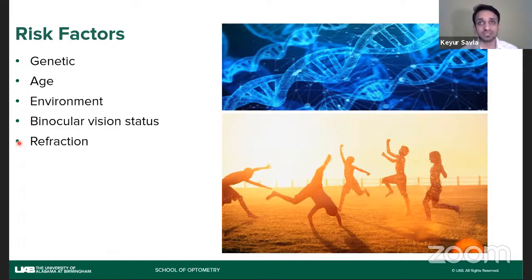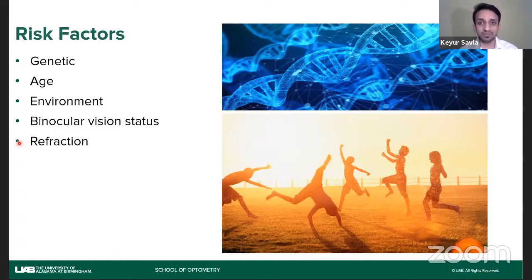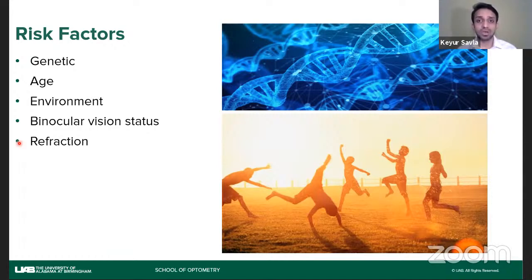Speaking about genetics — something you can really share with patients because they understand hereditary factors — if one of the two parents has myopia, it is two to three times more likely that the child will have myopia. If both parents have had or have myopia — and that means even if they got surgeries done, they still had myopia, so walking in without spectacles doesn't mean they are myopia-free — then it is almost five to six times more likely, compared to an individual with both emmetropic parents, that their child will have myopia. That's a very high risk.